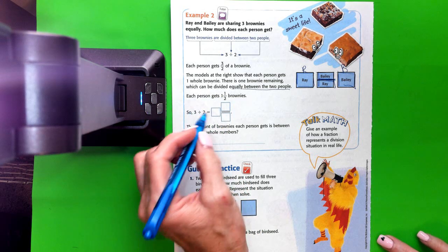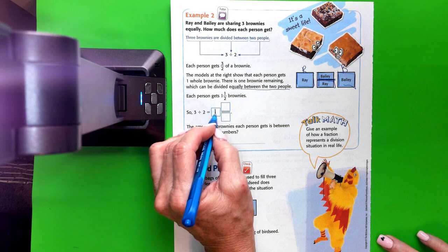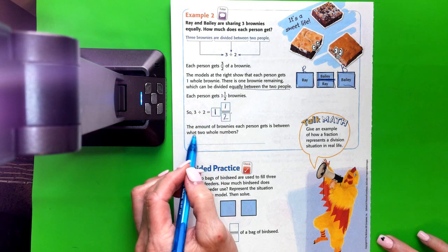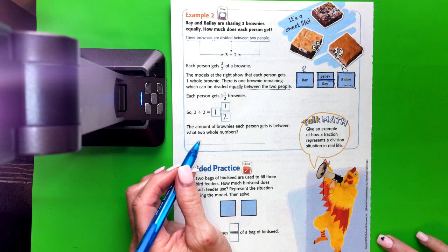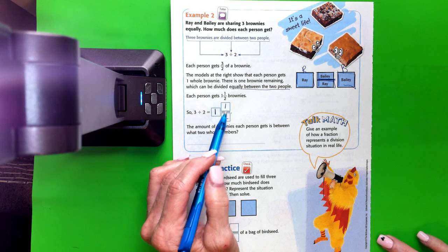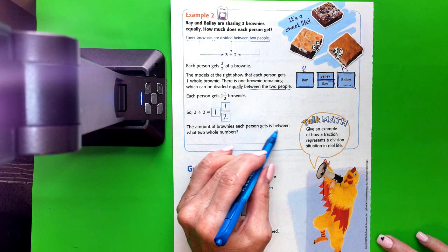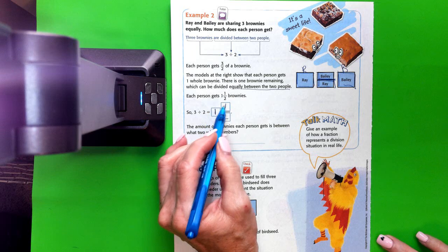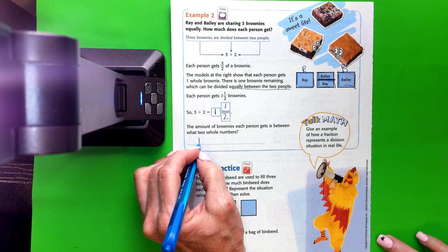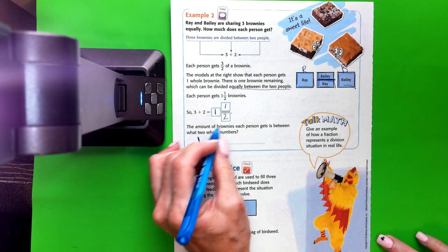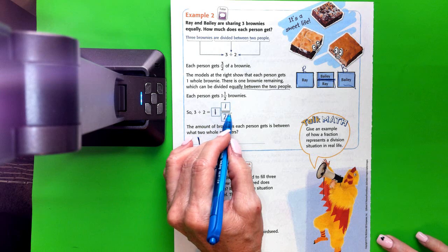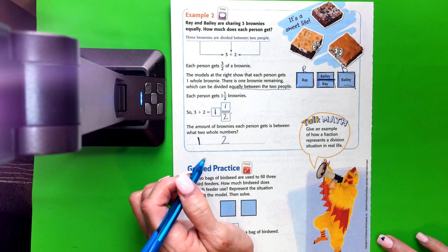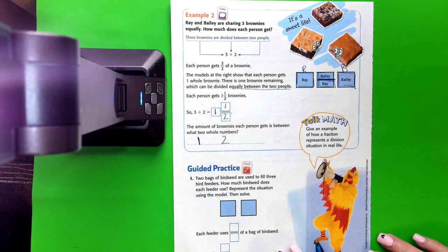So 3 divided by 2 is equal to 1 and one half. And again, they're going to ask us, what two whole numbers does this fall between? The amount of brownies each person gets is between what two whole numbers? Well, this is already 1, and this is a half. So we know it's going to fall after 1, but we're only at 1 and a half. We're not all the way to 2 yet. So it's going to fall somewhere between 1 and 2.